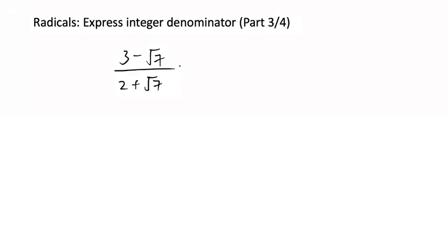Radicals: Express Integer Denominator, Part 3. In here we would like an integer in the denominator, so we multiply by its conjugate. Same thing we've been doing.